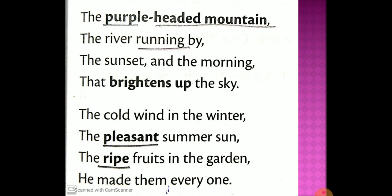The purple-headed mountain — purple-headed refers to the top or tip of the mountain. Why purple-headed? Because mountains are very far from us, so when we see those mountains during sunset and sunrise, it looks purple in color. That is why they said purple-headed mountain. The river running by — running means flowing. As you know, a river cannot run, it only flows. The sunset and the morning that brightens up the sky — brightens up means makes it bright.